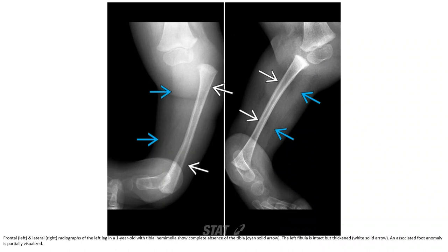This is a frontal and lateral radiograph of the left leg in a 1-year-old with tibial hemimelia showing complete absence of the tibia. The left fibula is intact but thickened, and an associated foot anomaly is partially visible.